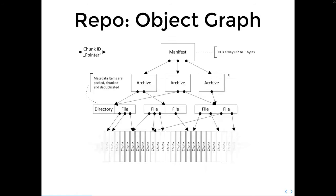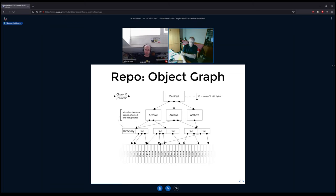Here is how the repository looks on a logical level. At the bottom there are many chunks — mostly the content data from your files cut into pieces. Small files produce one chunk; a 100 GB file might result in thousands or even 100,000 chunks. A file is represented as metadata plus a list of pointers to all the chunks needed to reassemble it.